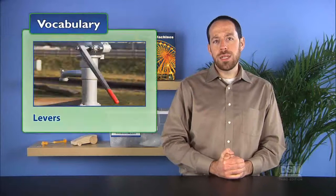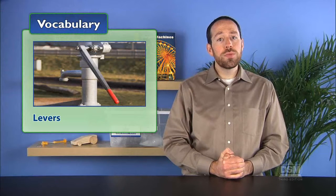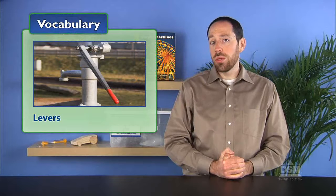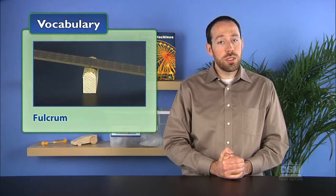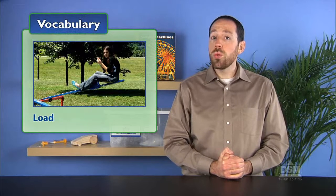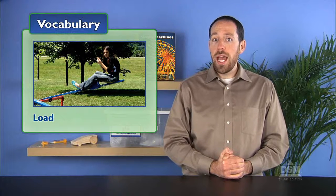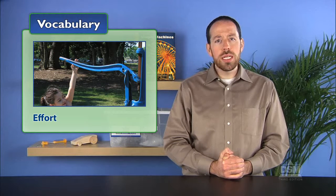Introduce levers to the class as simple machines that transmit and sometimes magnify force. Further explain that all levers consist of four components: an arm, which can be a beam or a bar; a fulcrum, which is the pivot point; a load, which is the object to be moved; and an effort, which is the force needed to move the load.